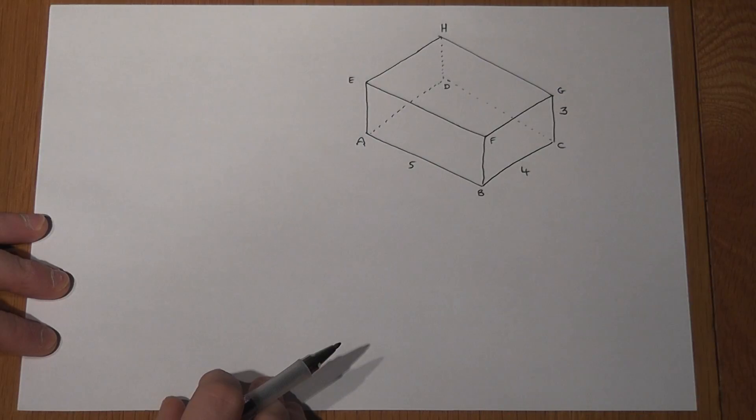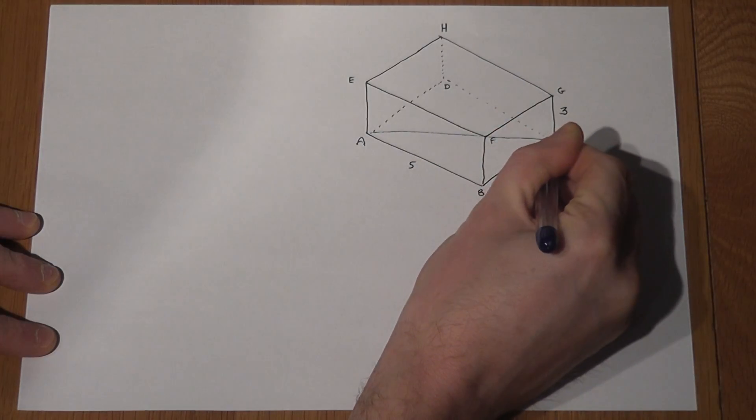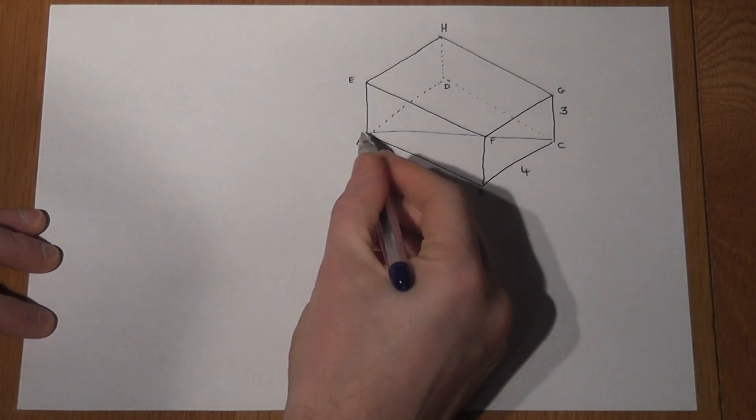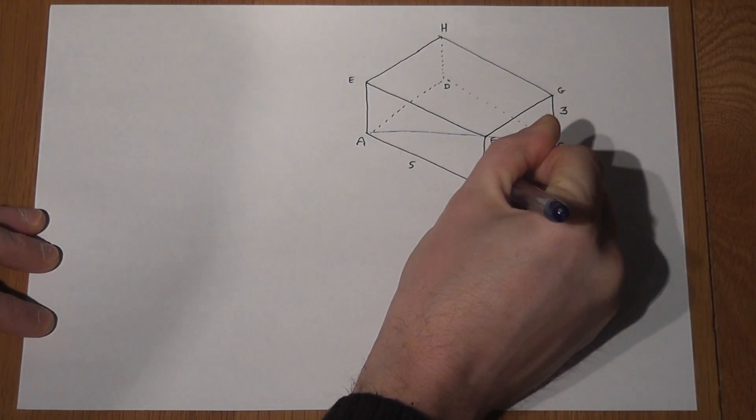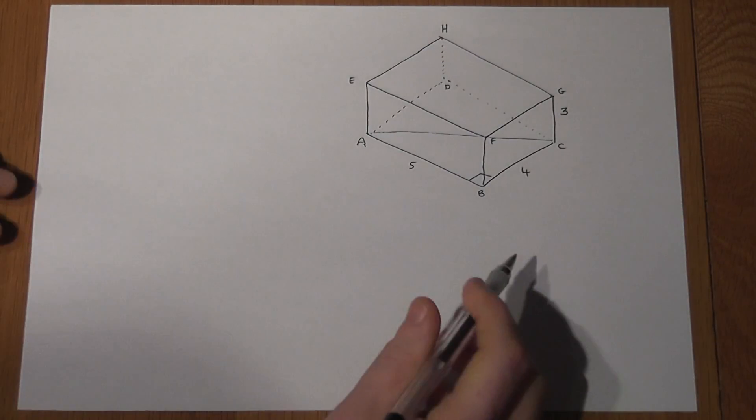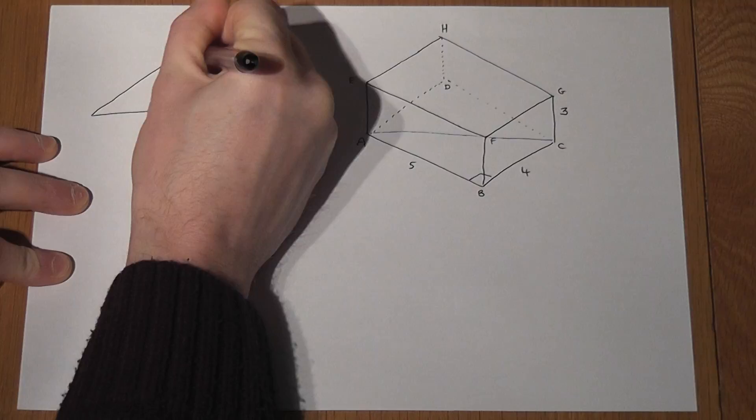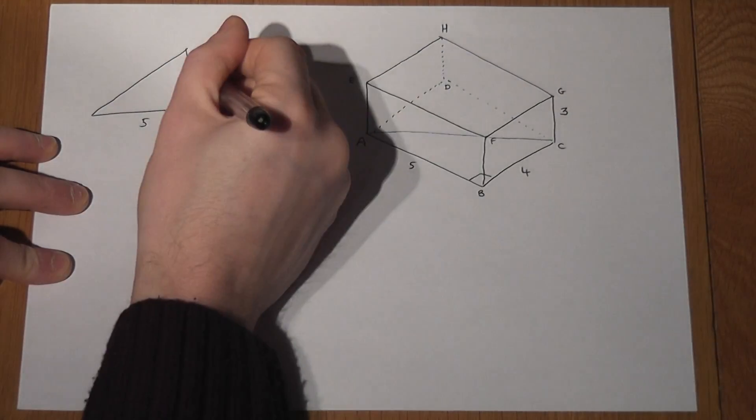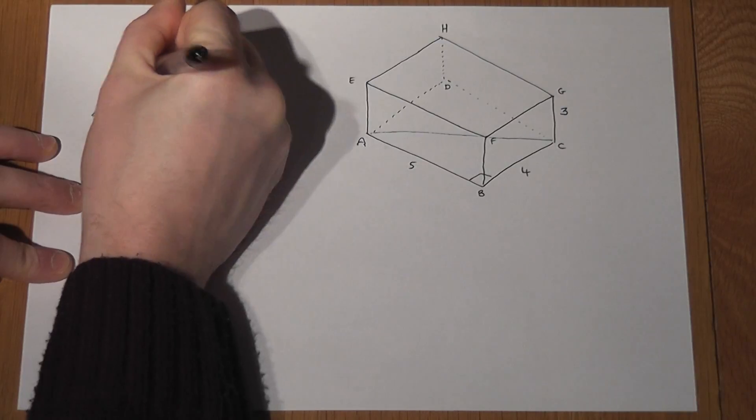Now the first length you may be asked to find is the length from A to C, and the key thing to realize here is that AC is the hypotenuse of a right angled triangle, which if I sketch out to one side, it looks like this. So AB is 5, BC is 4, and this length here is the one we're looking to find.